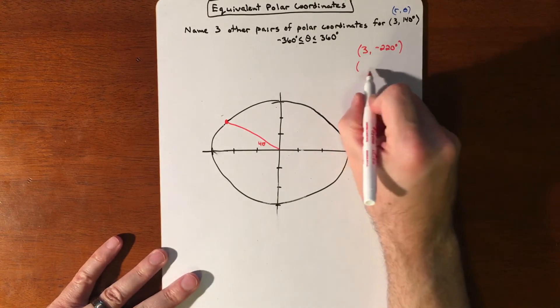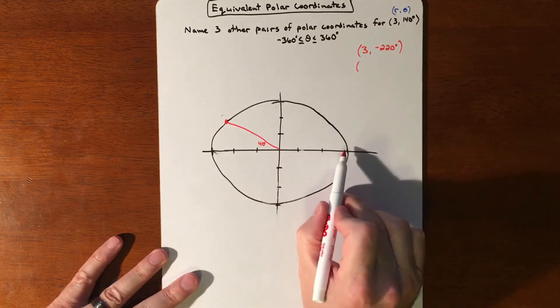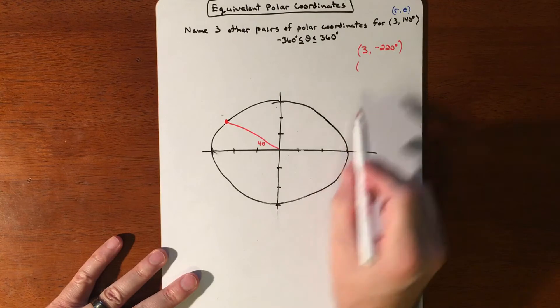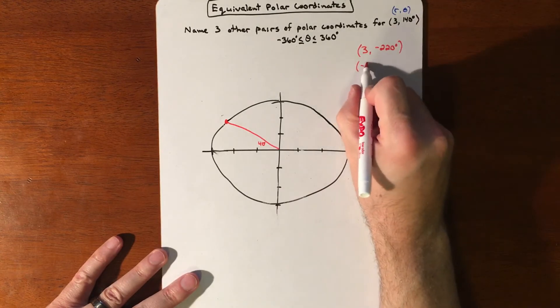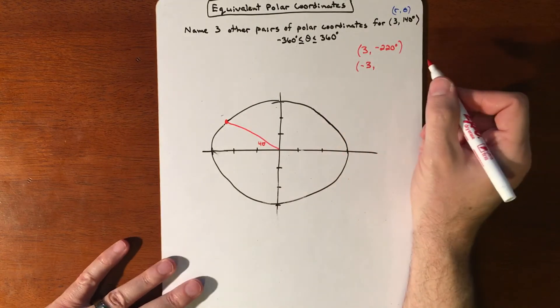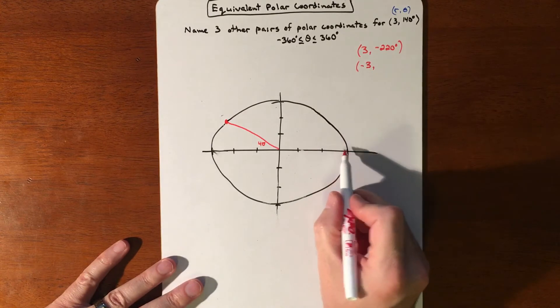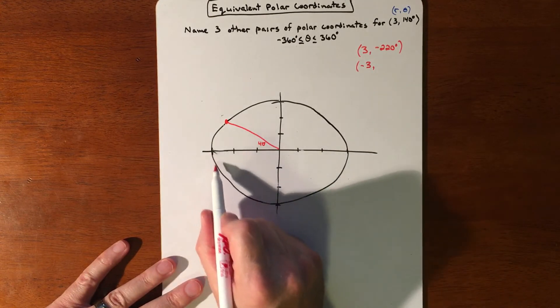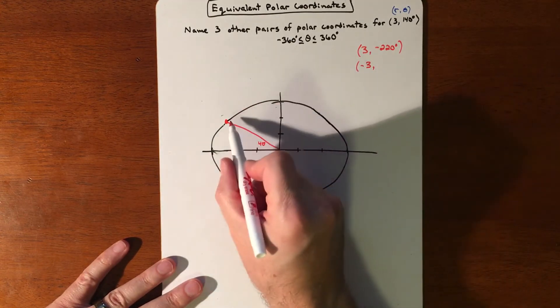Another way to get there is instead of going in a positive direction for your radius, you could go a negative radius and then move. So if you want a negative radius, and then you have to figure out how far it takes to get all the way around to there.